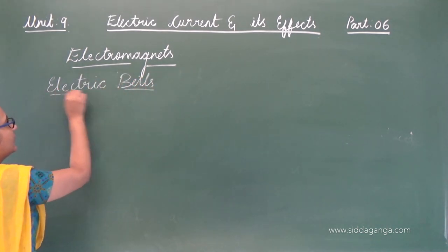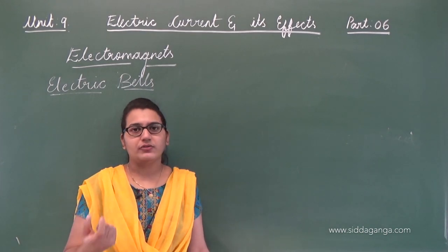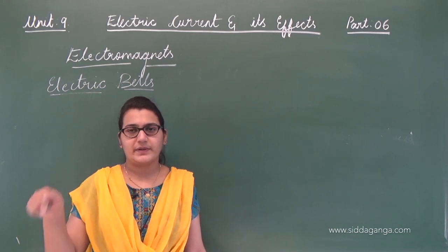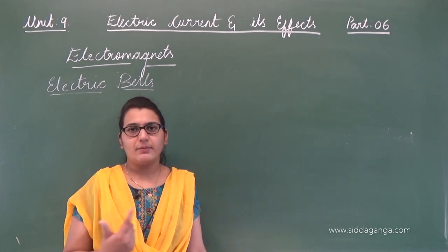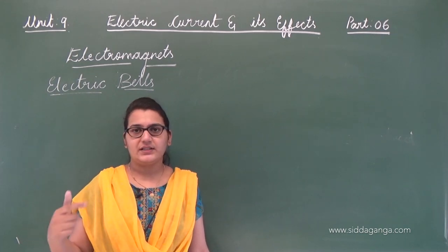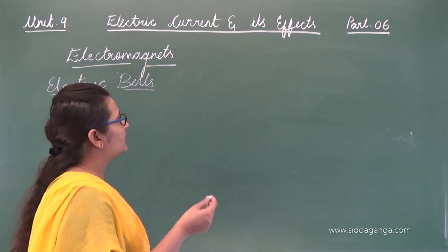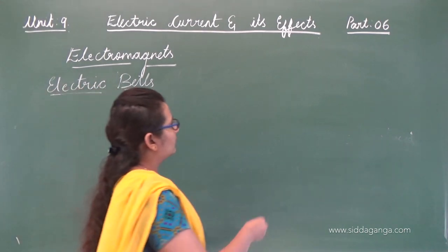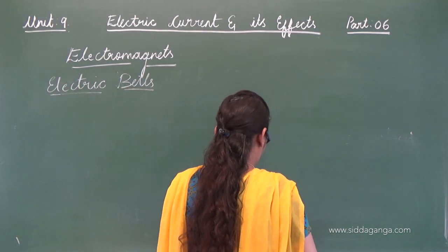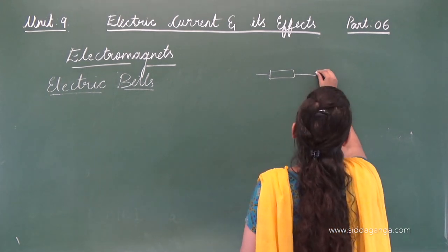Now let us study in detail about electric bells. You have all seen electric bells — in school, in a principal's chamber, you press a button and it makes a sound. Someone nearby hears it and responds. This bell is based on an electromagnet. Let us see how it works. First, let us see the construction — here we have a switch and a cell.